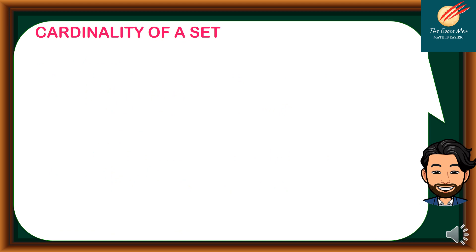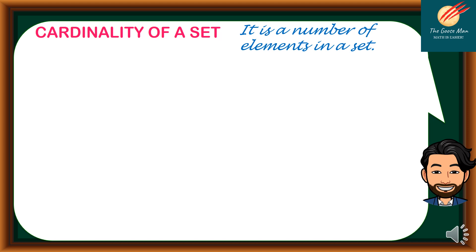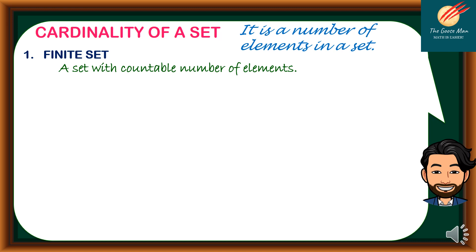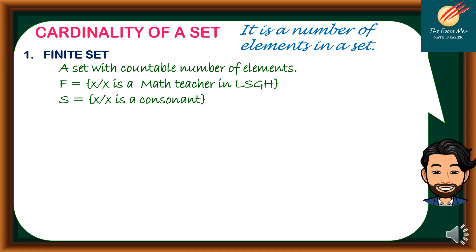Let's move on to cardinality of a set, which refers to the number of elements in a set. A set can be classified into three types. The first is a finite set — a set with a countable number of elements. For example, F = {X | X is a math teacher in LSGH}. You can count the number of teachers. Another example: S = {X | X is a consonant} — you can count the consonants in the alphabet.